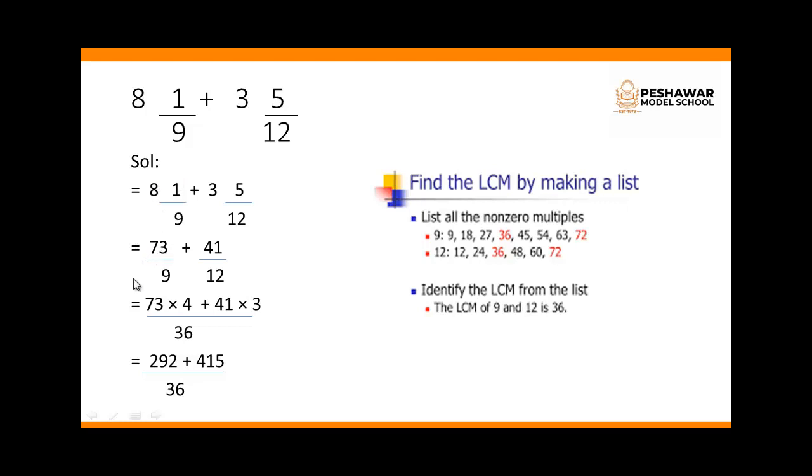So first fraction is 73 over 9. Plus 12 times 3 is 36, plus 5 we will get 41. So the second fraction is 41 over 12. Now we have to find the LCM for this.